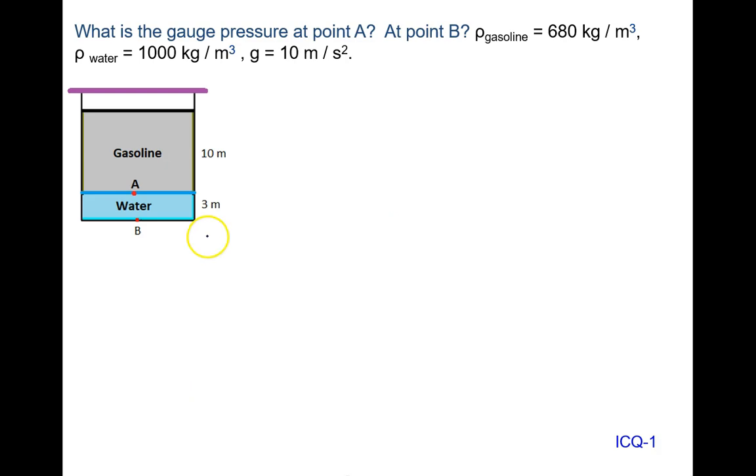What is the gauge pressure at point A? At point B? Density of gasoline is given, density of water is also given, and gravity is given. Gauge pressure means we have to calculate only h rho g.